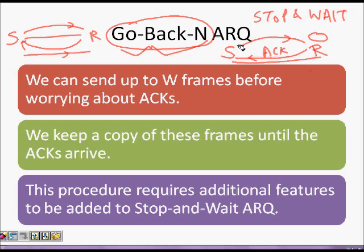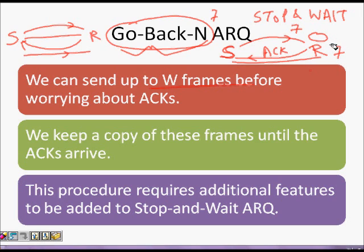Go-Back-N is another mechanism with better throughput. Instead of sending just one packet, the sender can send up to W frames - for example, seven frames: one, two, three, four, five, six, seven - without waiting for an ACK. The sender stops after sending seven packets. The receiver knows the sender cannot continuously bombard it with packets; only a maximum of seven packets can be received before an acknowledgement must be sent.